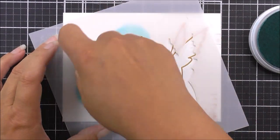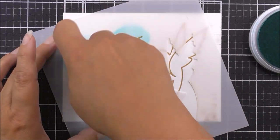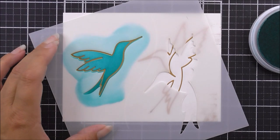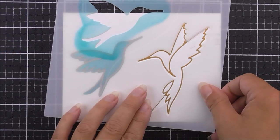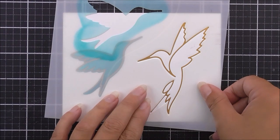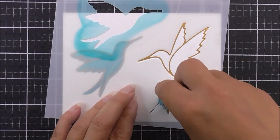The ink I'm using is the Aqualicious from Altenew, and I'm using a small blending tool to add the ink through the stencil. I'm trying to add more of the ink at the base of the bird rather than the tips of the wings to create a beautiful gradient effect.